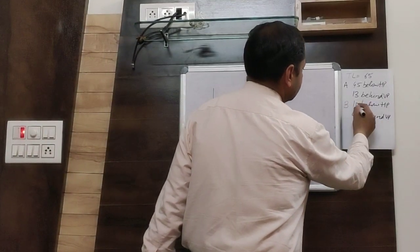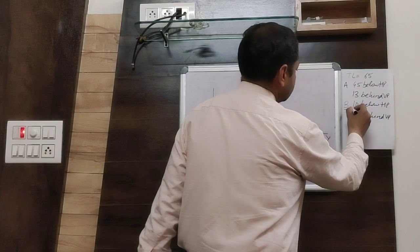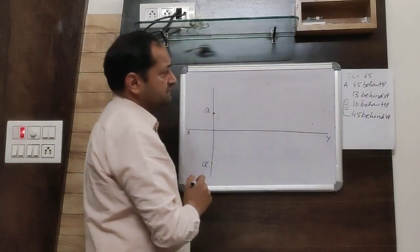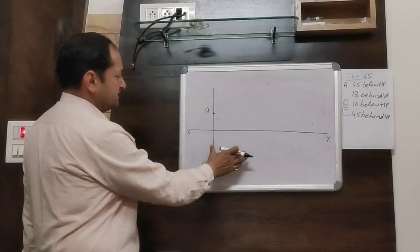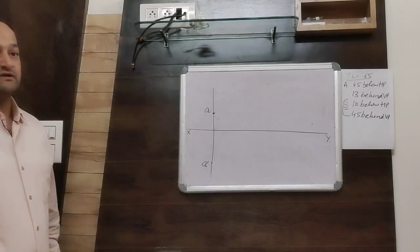Next, you are given the position of point B and the true length of the line, 65mm. But the distance between the end projectors is not given here.